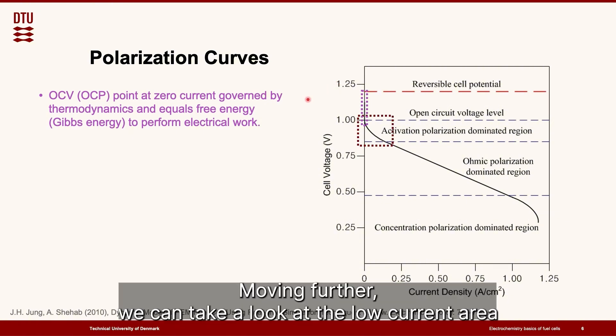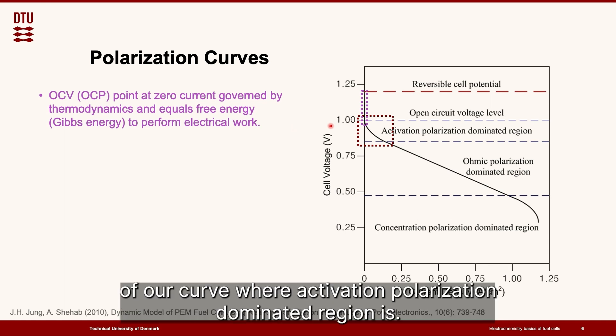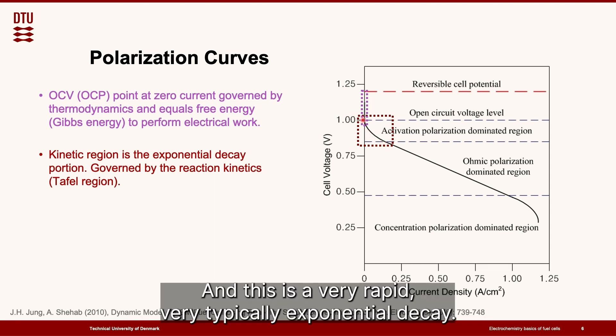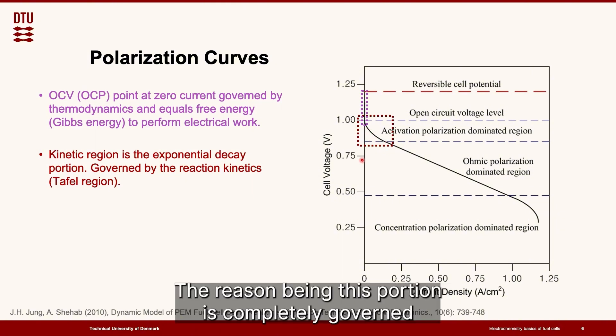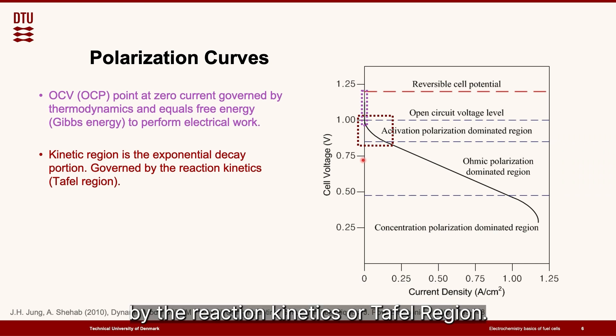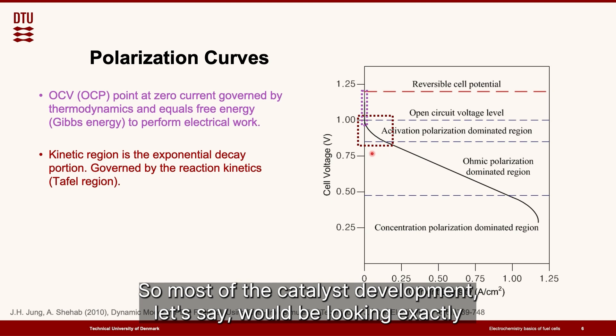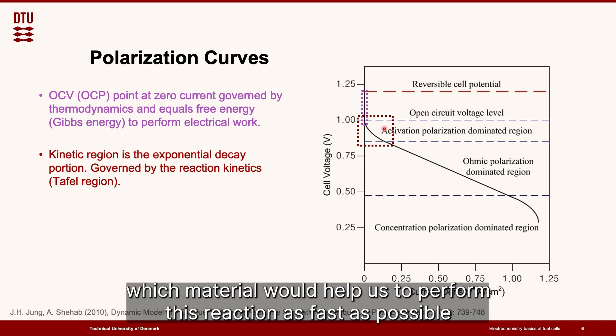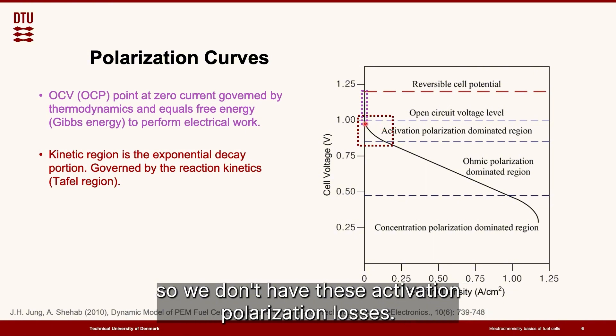Moving further we can take a look at the low current area of our curve where activation polarization dominated region is. In this region kinetics is something that governs the behavior of this curve and this is a very rapid, typically exponential decay. The reason being this portion is completely governed by the reaction kinetics or Tafel region. So most of the catalyst development would be looking exactly at this portion of the graph trying to figure out which material would help us to perform this reaction as fast as possible so we don't have this activation polarization losses.